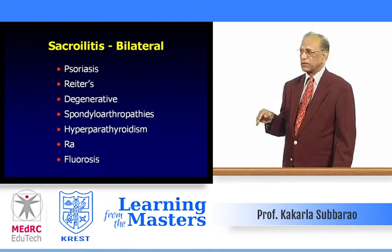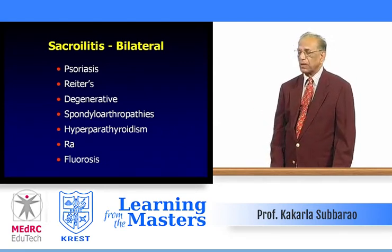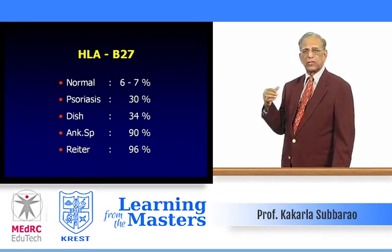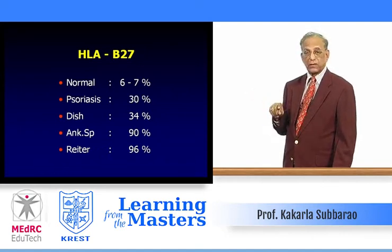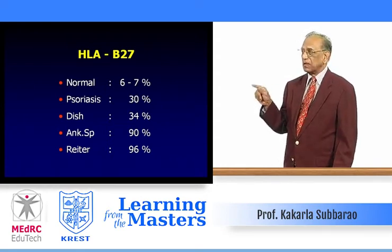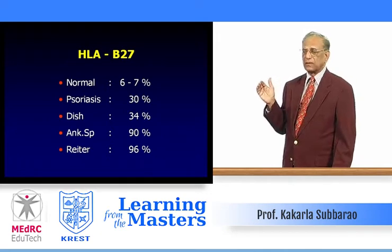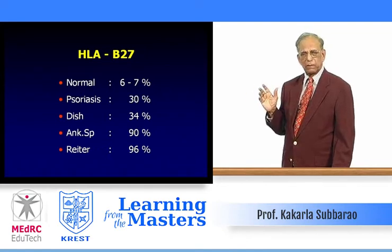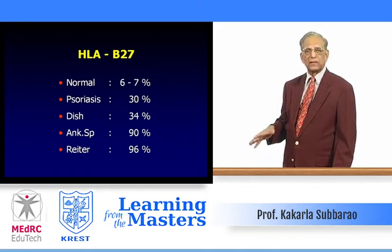Hyperparathyroidism: erosive changes, rheumatoid arthritis, and enthesopathy — usually a sclerotic type of degenerative joint disease. In spondyloarthropathies, HLA-B27 studies may help: in the normal population 5-7% are positive; in psoriasis up to 30%; in DISH (disseminated idiopathic skeletal hyperostosis) 34%; in ankylosing spondylitis 90%; and in Reiter's syndrome 96%. Therefore, when differentiating psoriasis from Reiter's syndrome, HLA-B27 can help. Additionally, psoriasis mostly involves the upper extremities while Reiter's syndrome mostly involves the lower extremities — feet, knees, and ankles.